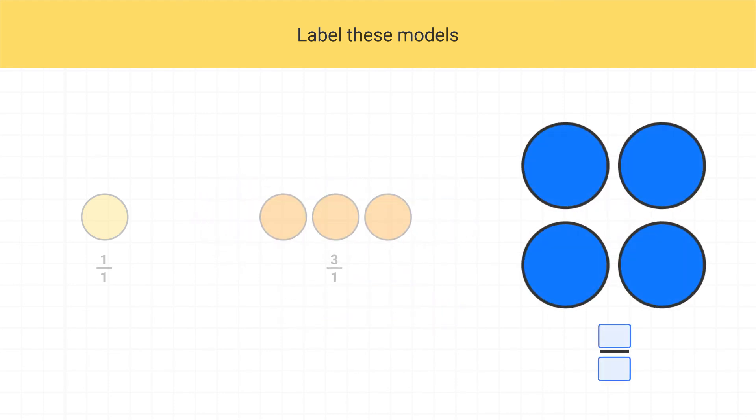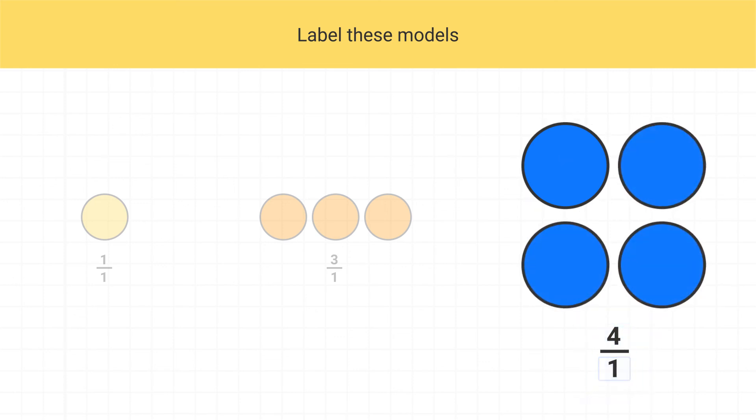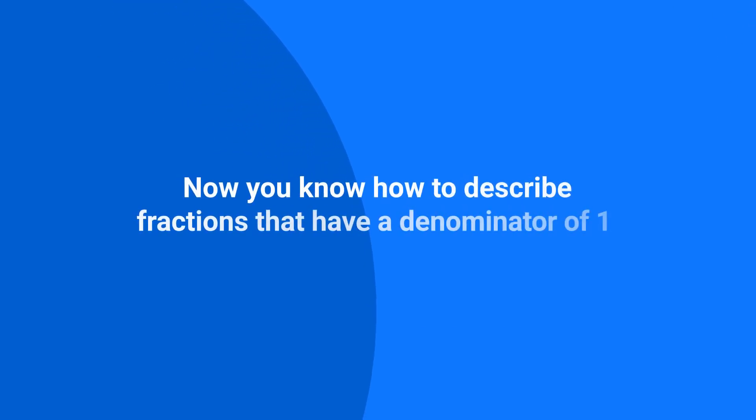Finally, this last model, it's 4 shaded pieces, and each piece is a whole circle, so this is 4 over 1. Great work! Now you know how to describe fractions that have a denominator of 1. That's all for now, but stay tuned for next time.